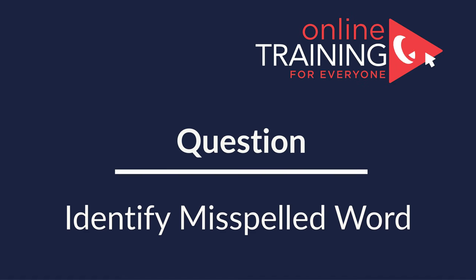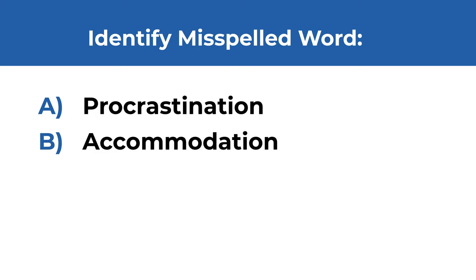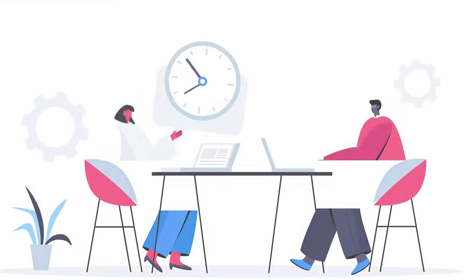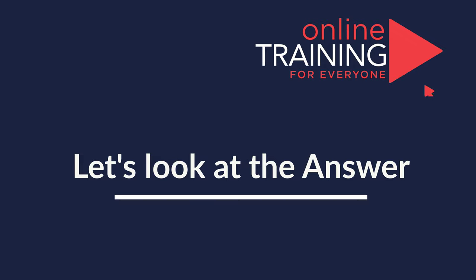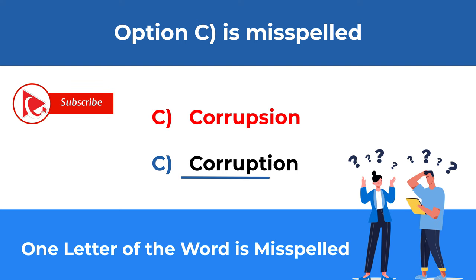Here's a test question where you're presented with four different words and need to identify the misspelled one. The words are: procrastination, accommodation, corruption, and adjudication. Take a close look — give yourself 10 to 15 seconds. If you look closely, you'll see that the word 'corruption' is misspelled. The correct spelling is C, O, R, R, U, P, T, I, O, N.